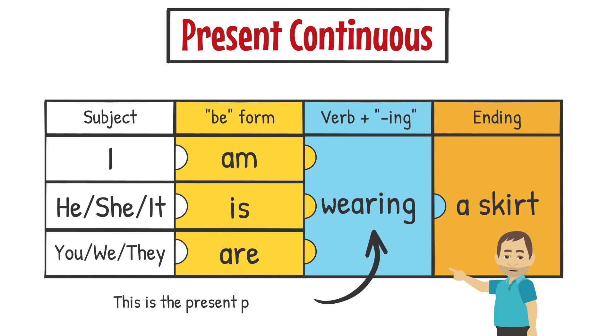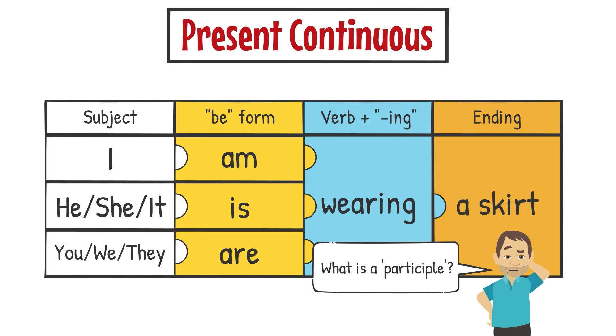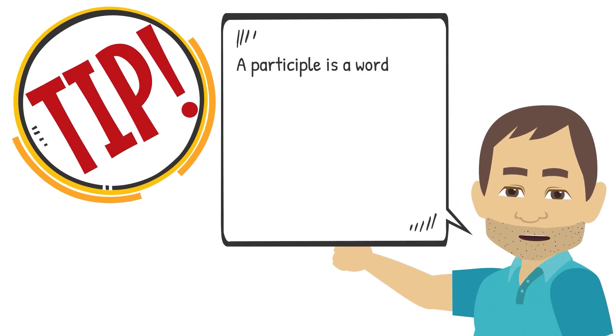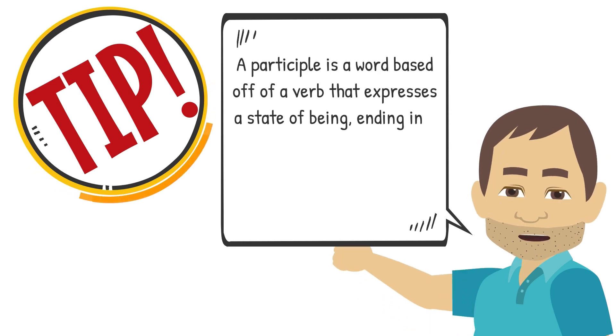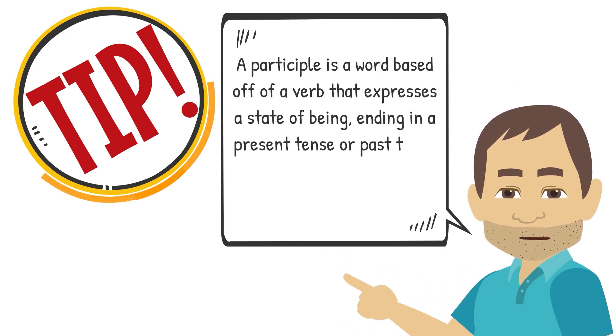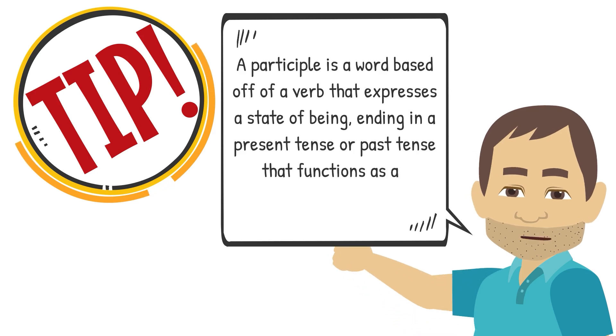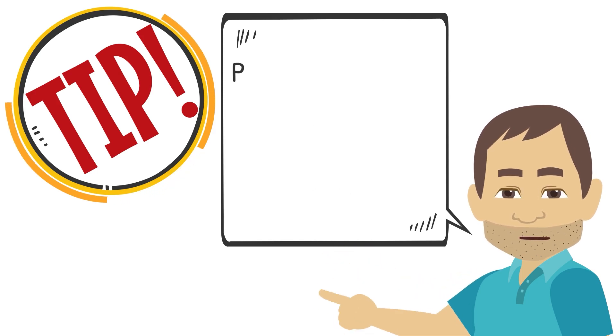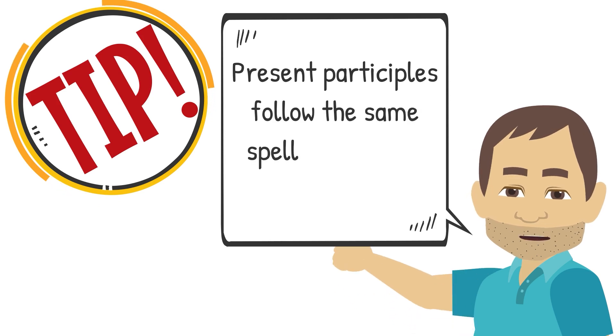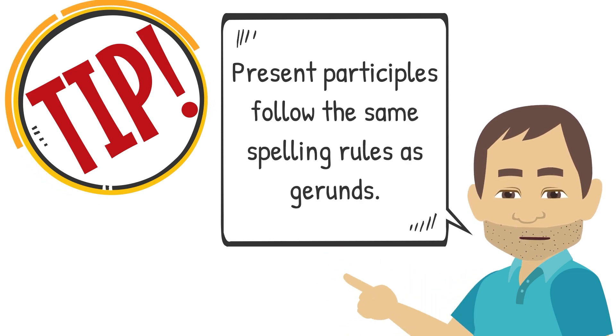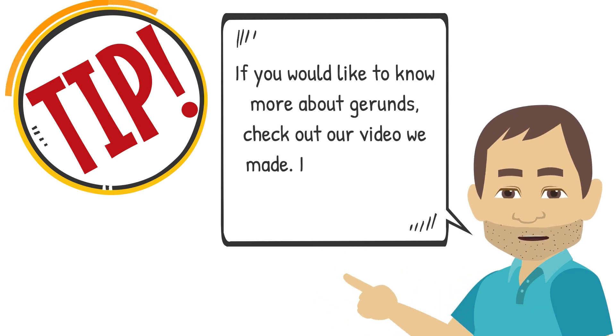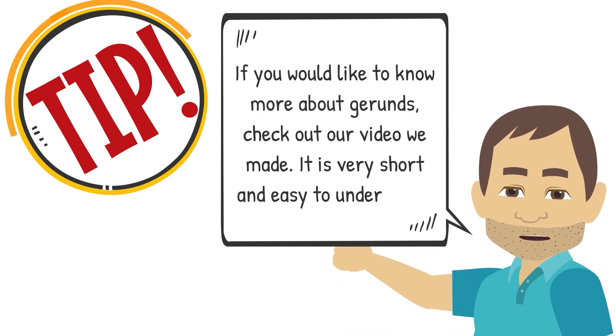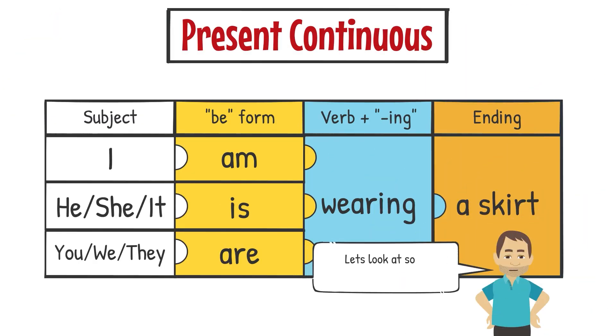This is the present participle. What is a participle? A participle is a word based off of a verb that expresses a state of being, ending in a present tense or past tense that functions as an adjective. Present participles follow the same spelling rules as gerunds. If you would like to know more about gerunds, check out our video. It is very short and easy to understand. Let's look at some examples.